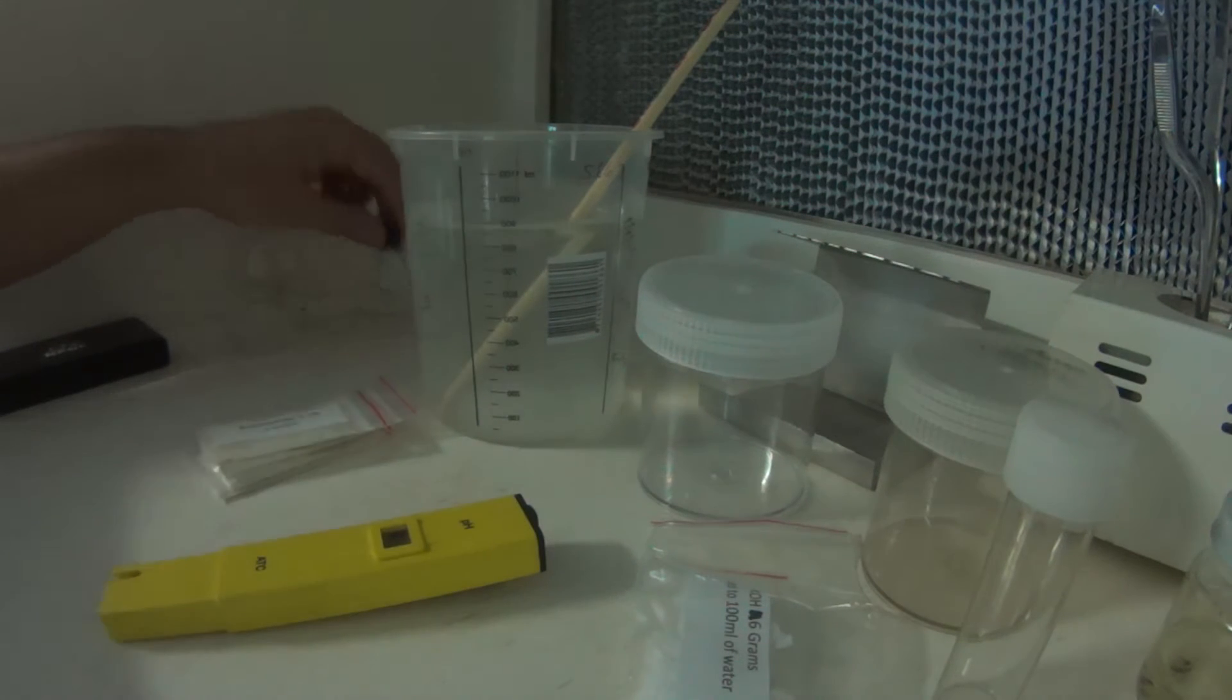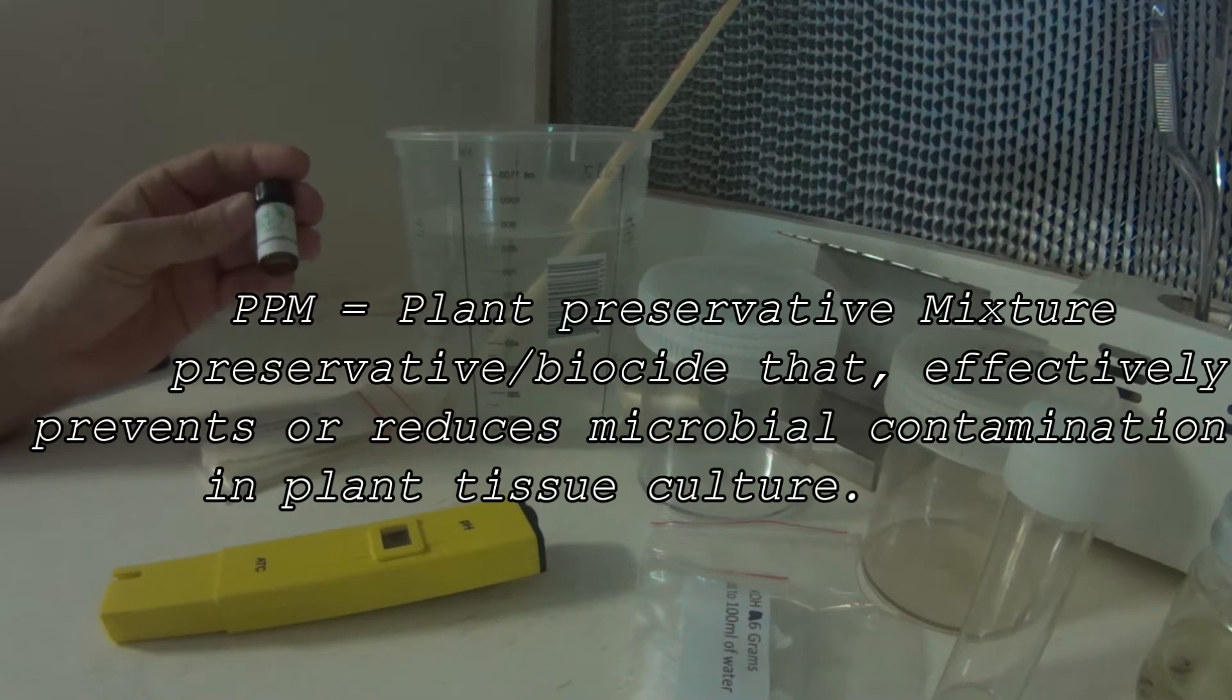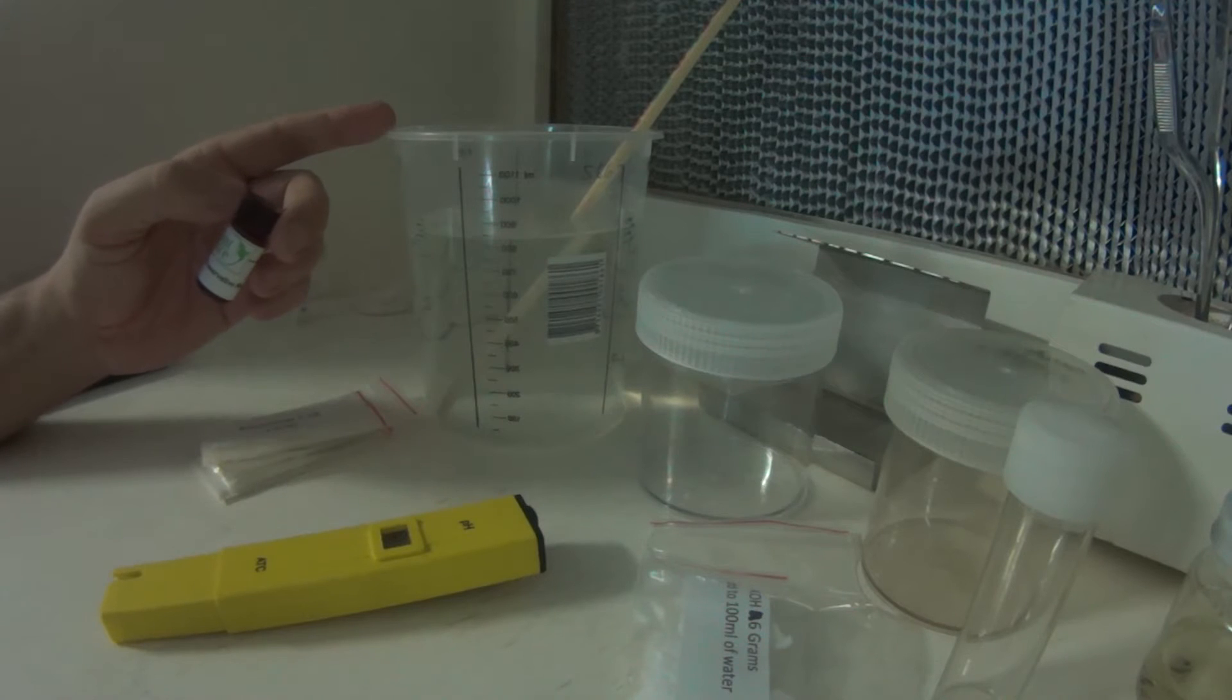One of the important ingredients, well, additives we can use in our media is plant preservative mixture and we supply within the kit a 5ml bottle. I only use about half a ml per liter of media. If you think you're going to have a problem with contamination in your media, you could also use a ml, increase that to a ml I mean.